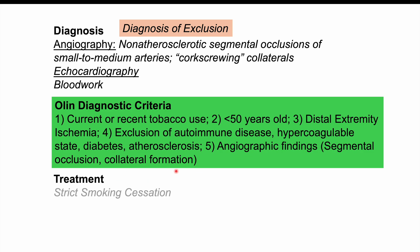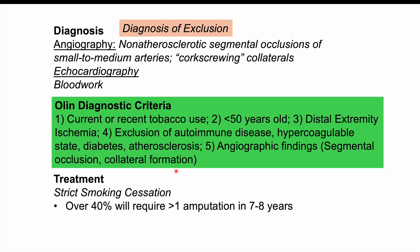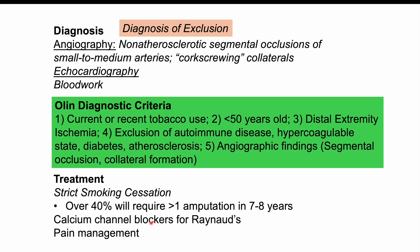Treatment involves strict smoking cessation — it must be complete, with no cigarettes or tobacco use at all, because even one or two cigarettes can prolong this condition. If patients continue to smoke, over 40% will require at least one amputation within seven to eight years. If patients have findings like Raynaud's, calcium channel blockers can be used. For ischemic pain, pain management may be utilized, including NSAIDs and narcotics in more severe cases.